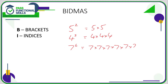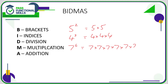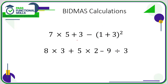After indices, we need to do dividing, then multiplying, then adding, and finally subtraction. The DMAS part is quite easy to remember because these are fairly common operations. Just remember that B stands for brackets and I stands for indices — these small numbers.